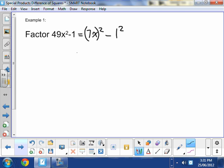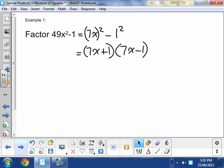There you go. So now I have a difference of 2 squares, and I can write it in factored form as 7x plus 1 multiplied by 7x minus 1. There you go. My x plus y, x minus y from the formula. That's correct.